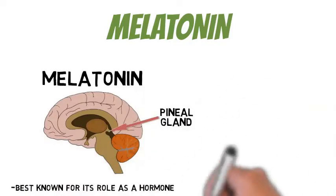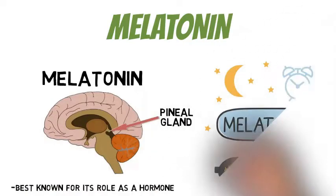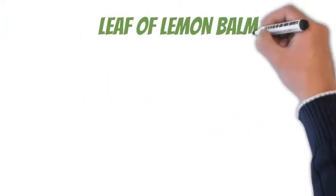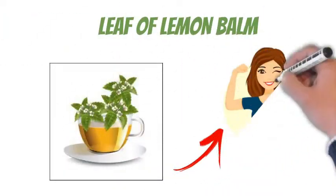Melatonin is a natural sleep hormone produced by the pineal gland in our brain and released at night to maintain a sleep-wake daily schedule known as the circadian rhythm. Leaf of lemon balm - its active ingredients are antioxidants that are good for your health.